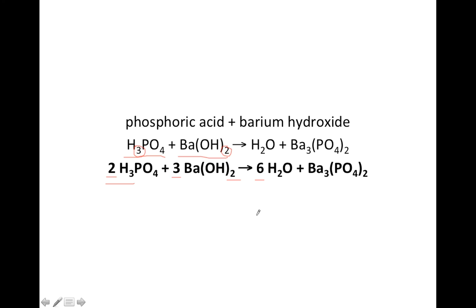Another way to balance this would have been to simply see that there's a three as a subscript next to the barium, so there must be a three here. And there's a two as a subscript after the phosphate, so there must be a two in front of the H3PO4. So there's a couple of different ways to think about the balancing here. Either works equally well, but this one is the trickiest one to balance.